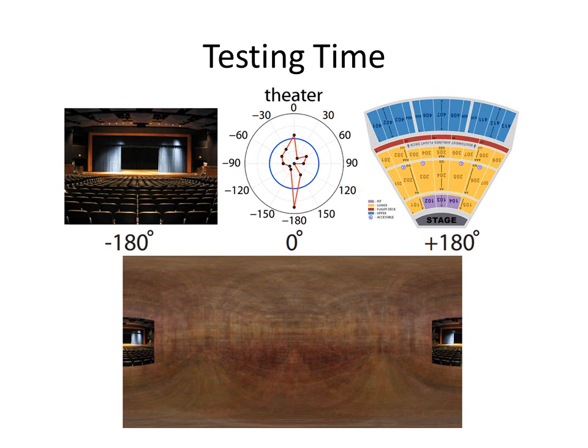During testing, given a limited field of view photo as input, our model recognizes the place category and produces a compass-like prediction of the observer's viewpoint. By superimposing the testing view on an average panorama of many theaters, we can automatically predict the possible layout that extends beyond the available field of view.